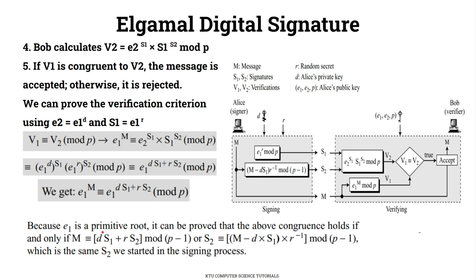This means M must be congruent to D·S1 + R·S2 mod (P-1). Rearranging, we get M minus D·S1 equals R·S2. Dividing both sides by R gives S2 equal to (M minus D·S1) times R inverse, which is exactly how S2 was defined in the signing process.